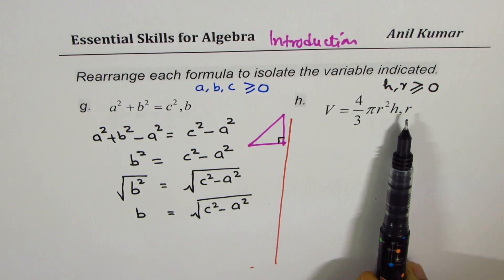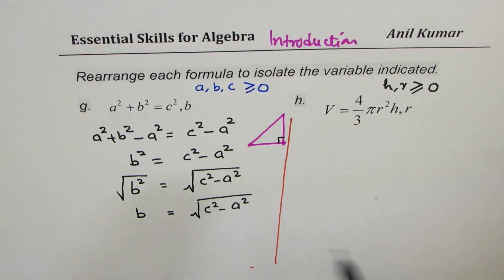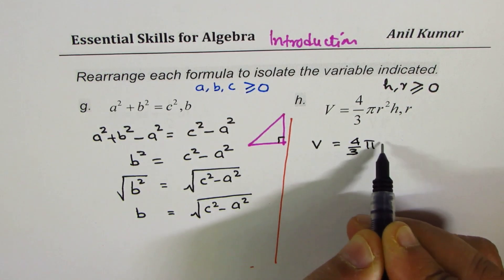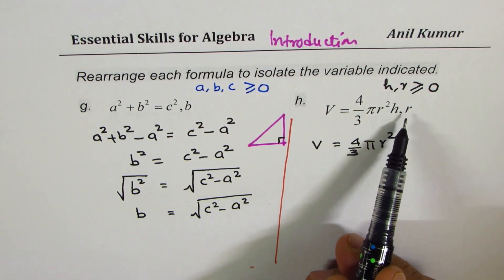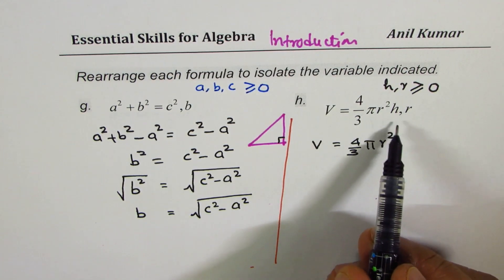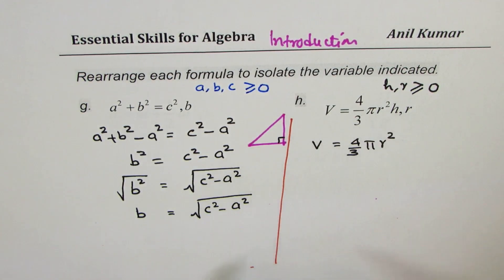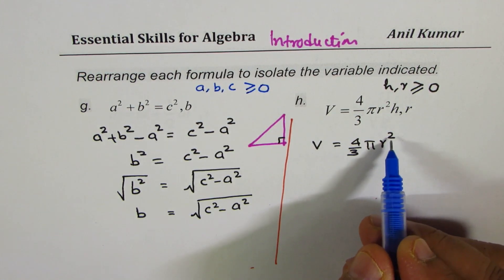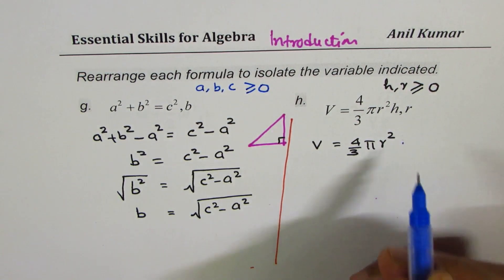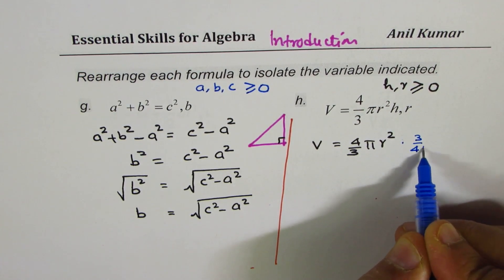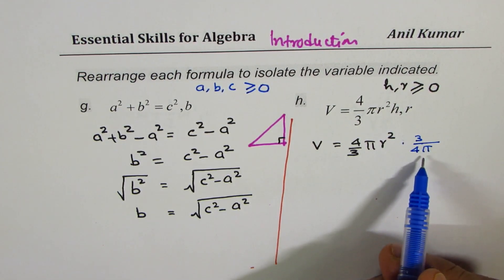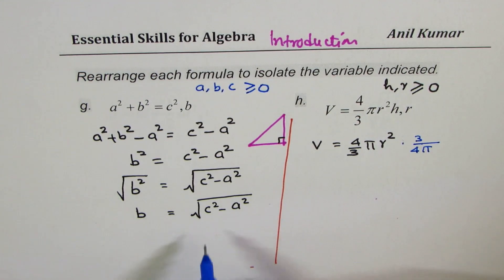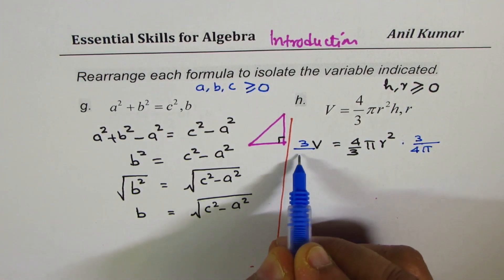Let's isolate r from the sphere volume formula V = (4/3)πr². We don't want any term other than r on the right side. Multiply both sides by 3/(4π). Three and three cancel; four pi cancels with four pi. So after multiplying by 3/(4π) on both sides, we isolate r².